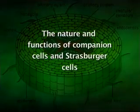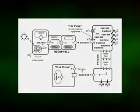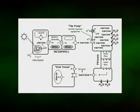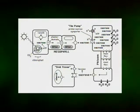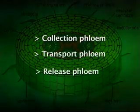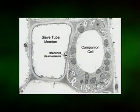Dear students, now we will discuss the nature and functions of companion cells and Strasburger cells. The phloem accumulates photosynthate from the mesophyll of leaves, transports it throughout the plant and releases it at sites where it is utilized in the growth and development of the plant. These functions are conveyed by the terms source, transport and sink. The terms collection phloem, transport phloem and release phloem were proposed by Van Bel in 1996 to indicate more clearly these important functions of the phloem, but these terms are not as yet widely used. Each of these functions — collection, transport and release of photosynthate — is intimately related to the structure and activity of companion cells associated with the sieve elements.